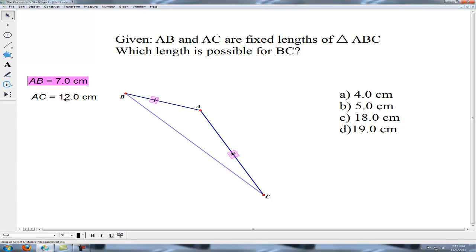You can see here AB is 7 centimeters and AC is 12. We will be examining the possibilities for lengths of the third side given two fixed distances. So what do we have here? Which length is possible for this purple side right here BC?